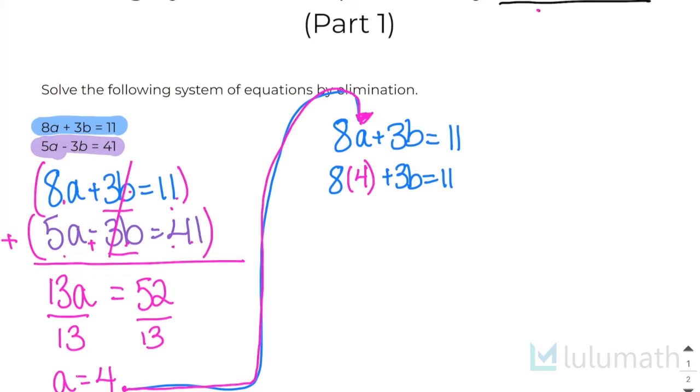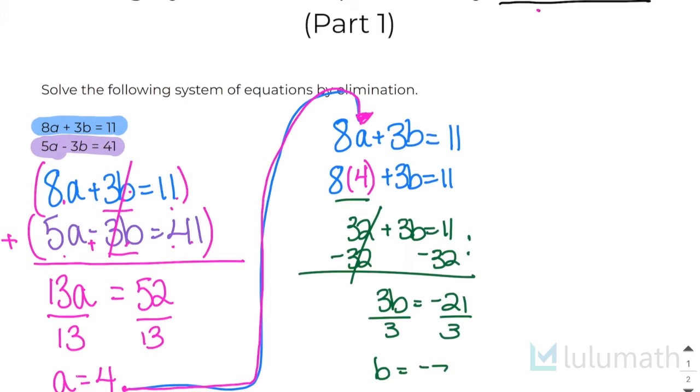And it's going to say 8 times 4 instead of 8 times a plus 3b equals 11. So now all I have to do is just go through and solve for b. So 8 times 4 is 32. I'm going to copy down plus 3b equals 11. Get rid of that 32 by subtracting it. So I end up getting 3b equals 11 minus 32 is negative 21. Divide by 3. So b equals negative 7.